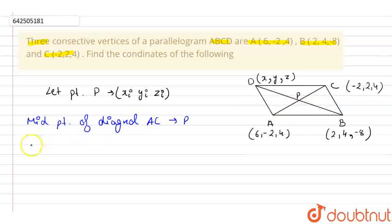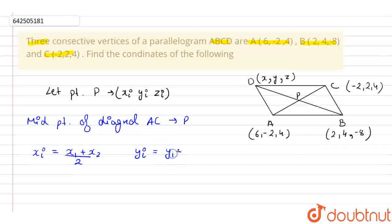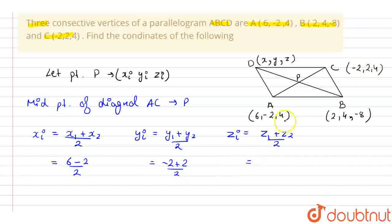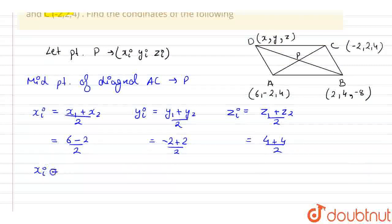To find point P, we use the midpoint formula: XI = (X1 + X2)/2, YI = (Y1 + Y2)/2, ZI = (Z1 + Z2)/2. Substituting the coordinates of A and C: XI = (6 + (-2))/2 = 4/2 = 2, YI = (-2 + 2)/2 = 0, ZI = (4 + 4)/2 = 8/2 = 4. So point P is (2, 0, 4).